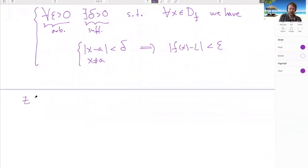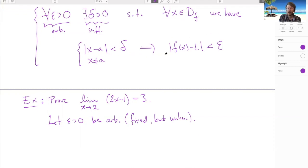So example: prove or use the epsilon delta definition here to prove that as x tends to 2, 2x minus 1 tends to 3. The proof is more or less as we saw for sequences. So first thing we do is let's let epsilon be arbitrary and then we say here fixed but unknown. And what we need to do is study this expression here and figure out for which x does this hold.